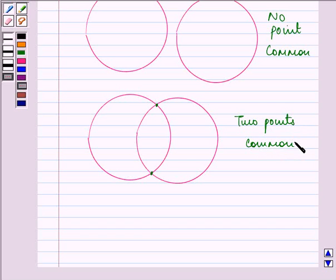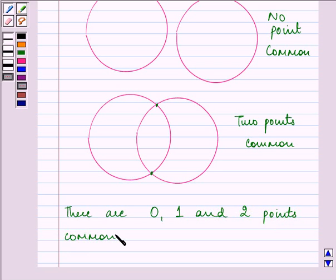By drawing different pairs of circles, we observed that there are 0, 1, and at the max two points common to each.